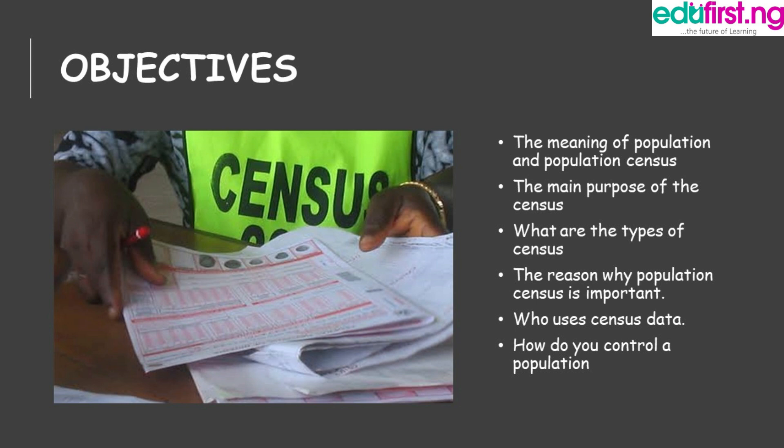Before we go on, we'll look at a few objectives for today's class: 1. The meaning of population and population census. 2. The main purpose of the census. 3. What are the types of census? 4. The reason why population census is important. 5. Who uses census data? 6. How do you control a population? Those are the six objectives we'll be looking at today.